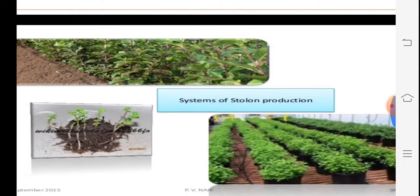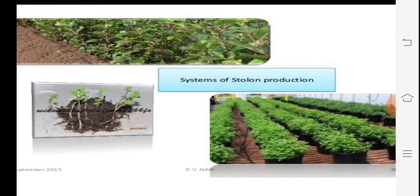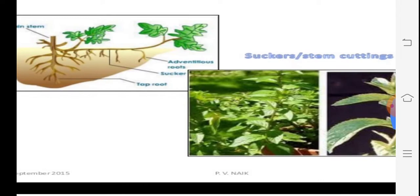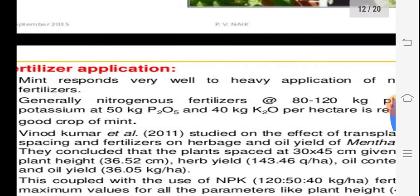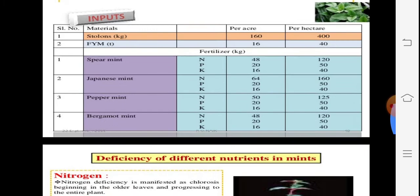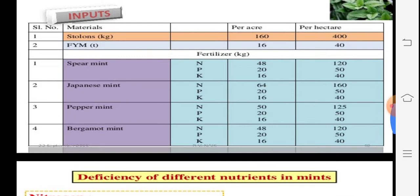The system of stolons and cultivation regions can be observed in field photographs. The main stem and suckers are visible, with a tap root system. These suckers are used for propagation. For fertilizers, NPK is important: nitrogenous fertilizers at 80–120 kg, phosphorus at 50 kg, and potassium at 40 kg per hectare, as recommended by scientist Vinod Kumar (2011). Transplantation gives good production.